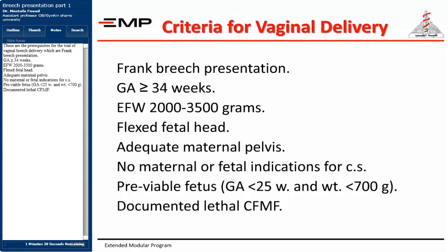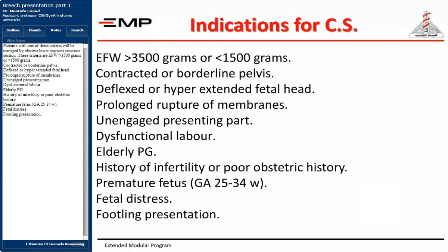Documented lethal congenital fetal malformations also allow vaginal delivery. Patients meeting any of the following criteria will be managed by elective lower segment cesarean section: EFW greater than 3500 grams or less than 1500 grams, contracted or borderline pelvis, deflexed or hyperextended fetal head, prolonged rupture of membranes, unengaged presenting part, dysfunctional labor, elderly primigravida, history of infertility or poor obstetric history, premature fetus at GA 25–34 weeks, fetal distress, or footling presentation.